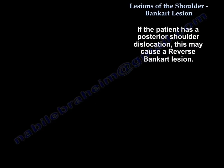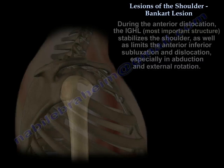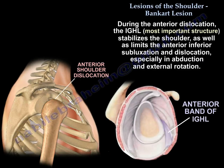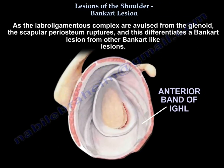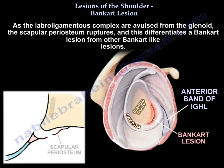If the patient has posterior shoulder dislocation, it is called reverse Bankart lesion. During anterior dislocation, the inferior glenohumeral ligament, which is the most important structure stabilizing the shoulder, limits the anterior inferior subluxation and dislocation, especially in abduction and external rotation. As the labral ligamentous complex is avulsed from the glenoid, the scapular periosteum ruptures, and that differentiates Bankart from other Bankart-like lesions.